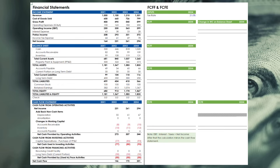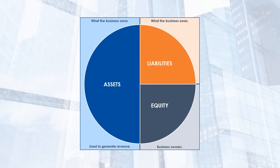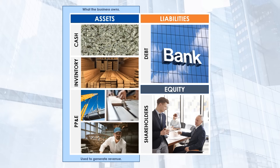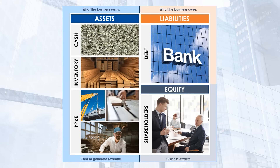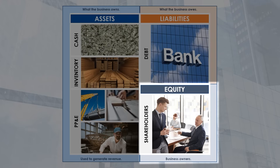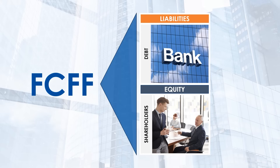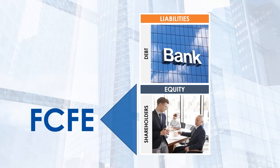For our first calculation, we'll be working towards free cash flow to the firm, which is the cash available to all providers of capital, including debt, equity, and everything in between. Recall from the financial statement series that a balance sheet can be divided into three categories: assets, liabilities, and stockholders' equity. A company uses its assets to generate revenue. The means of owning these assets is supported by providers of debt and equity. Free cash flow to the firm represents the cash available after the company has paid all its business expenses and covered investments in assets like inventory and equipment, but before capital providers realize any benefit. Free cash flow to equity, in contrast, represents the cash available to shareholders only.